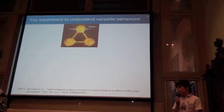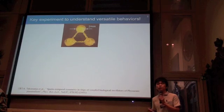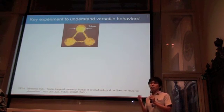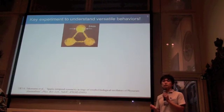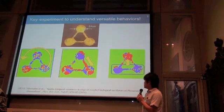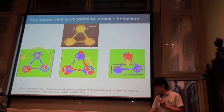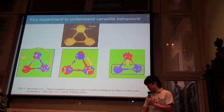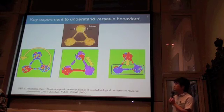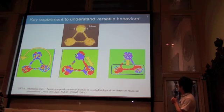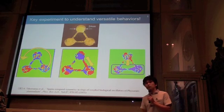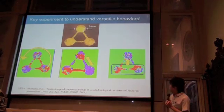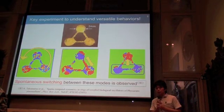There is a key experiment to understand the versatile behaviors of slime mold, which was done by Takamatsu et al. She made a microstructure for physically coupled oscillators with slime mold and observed oscillatory patterns with thickness. The color describes the thickness. Red parts move rotationally — she called that the rotation mode. The middle movie shows the anti-phase half-period mode, and the last one shows the partial in-phase mode. So it is clear that slime mold can exhibit versatile behaviors, and more surprisingly, she reported spontaneous switching between these modes.